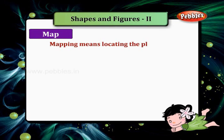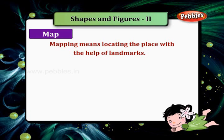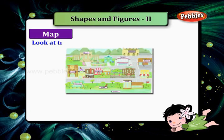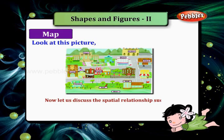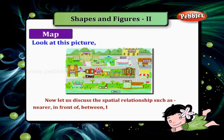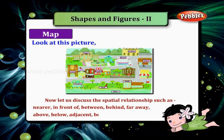Mapping means locating the place with the help of landmarks. Look at this picture. Now let us discuss the spatial relationships such as nearer, in front of, between, behind, far away, above, below, adjacent, bottom, top, and so on.